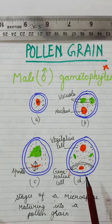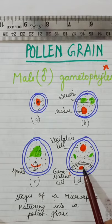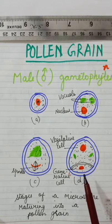This is the generative cell and it divides prior to the dehiscence of the anther and pollen grains shed at three cell stage. In few plants, pollen grains shed at three cell stage when this generative cell divides.